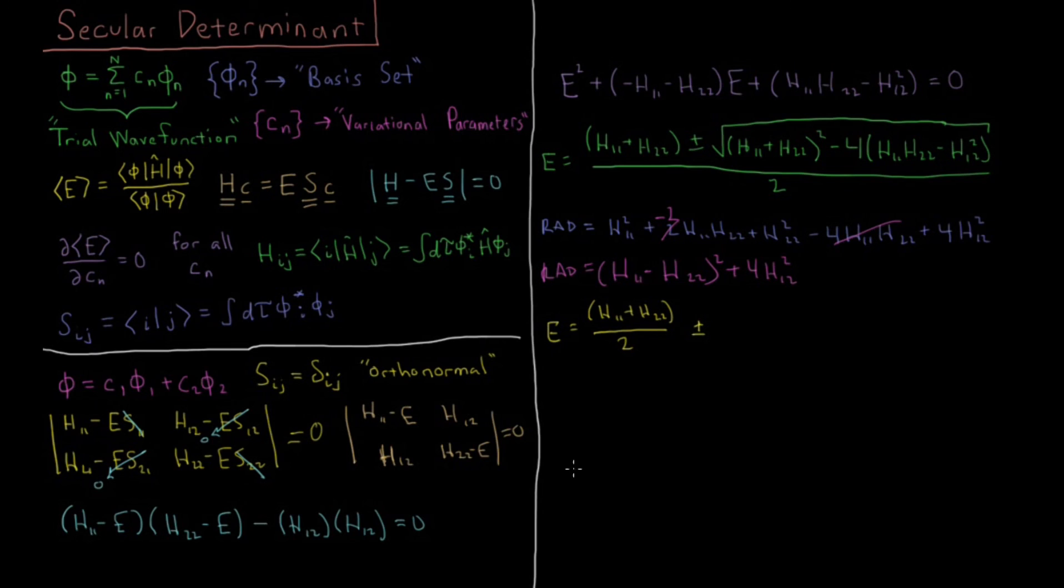But I can write that also in another way. I can write that this equals 4 times [(H11 - H22)/2]² plus H12². I can factor it in that way as well, and then I can bring a factor of 2 out into the front, and that factor of 2 is going to cancel with this denominator here.